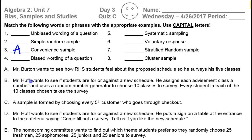Now B — Mr. Huff wants to see if students are for or against a new schedule, so he assigns each advisement class a number and uses a number generator to choose ten classes to survey. If he picks your class and every student takes a survey, which method of sampling is that? That's your cluster sampling. He's picking whole classes at a time, so that's cluster.